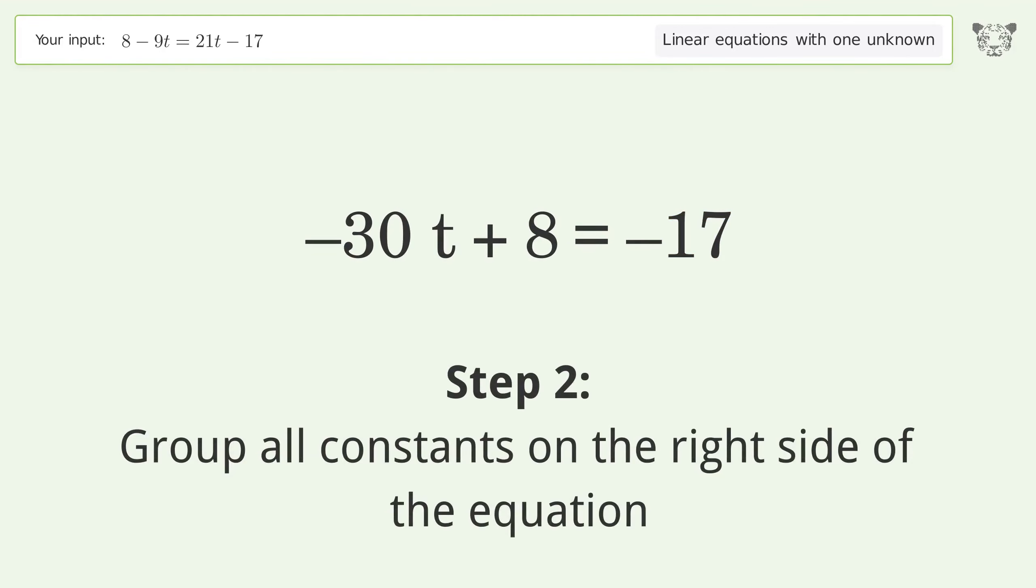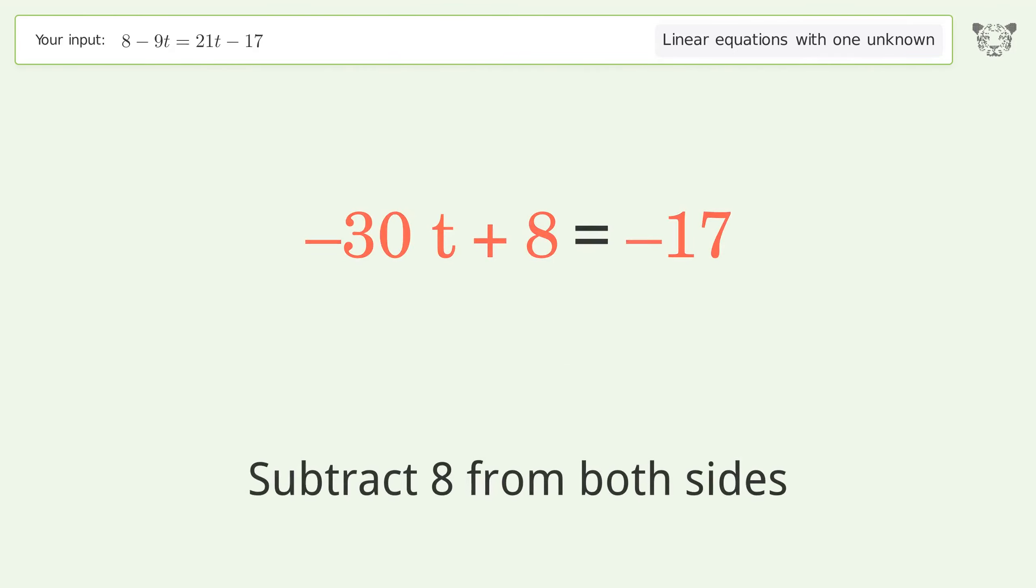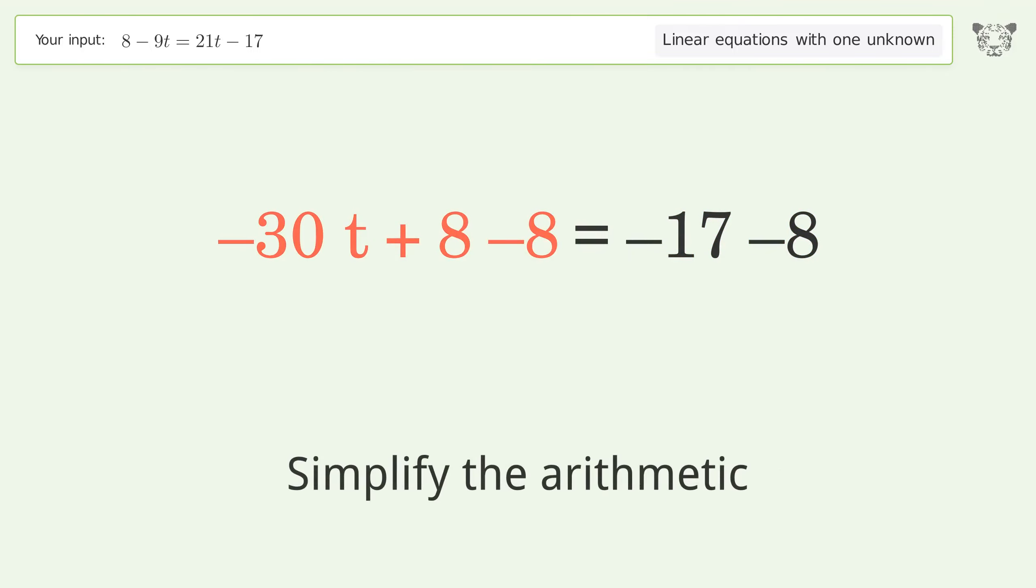Group all constants on the right side of the equation. Subtract 8 from both sides. Simplify the arithmetic.